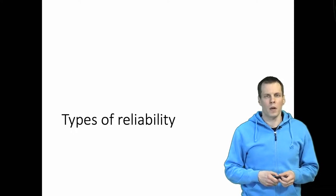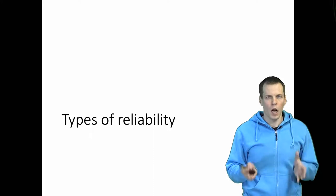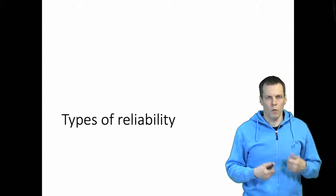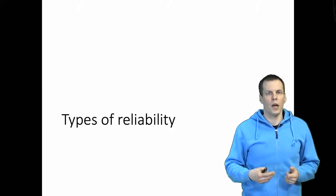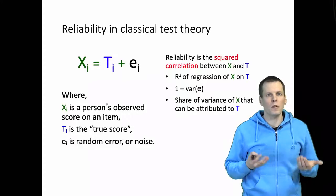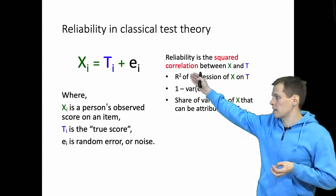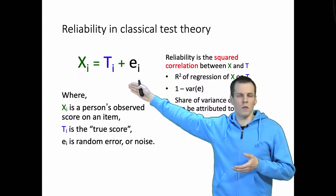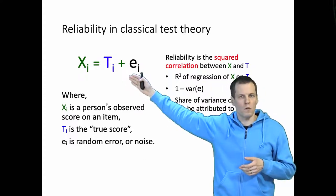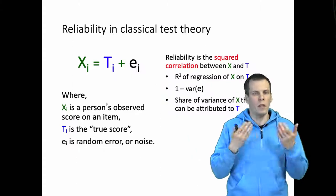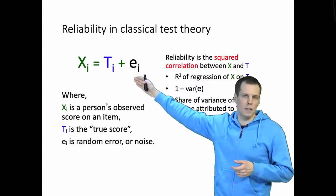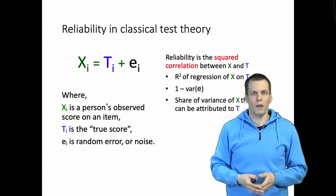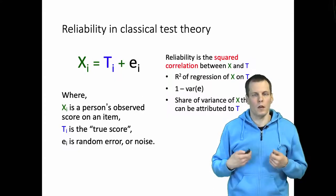Literature on measurement and reliability sometimes differentiates between different types or facets of reliability. This difference is also made in the applied literature discussing different reliability coefficients. Typically when we start discussing reliability, the starting point is the classical test theory equation. The idea is that variation in observed scores X is a function of variation in true scores T plus some error variation, or an individual observed score X is a sum of an individual true score plus some random noise. But this is not the only way of thinking about reliability.